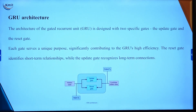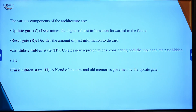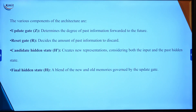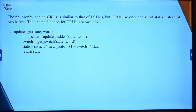The update gate and reset gate are the two important gates each serving a unique purpose. The reset gate identifies short-term relationships and the update gate recognizes long-term connections. The various components of the architecture are: the update gate which decides the degree of past information forwarded, the reset gate which decides the amount of past information to discard, the candidate hidden state which decides new representations from both input and past hidden state, and the final hidden state which is a blend of both.